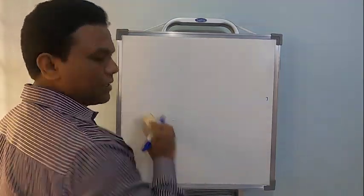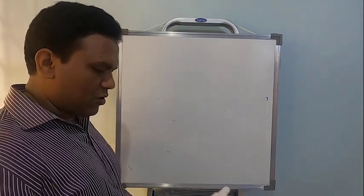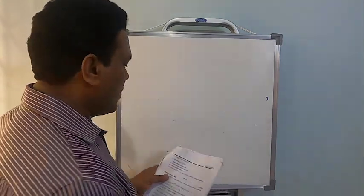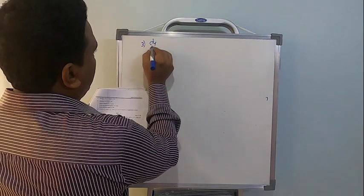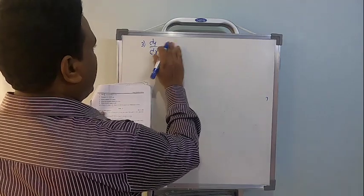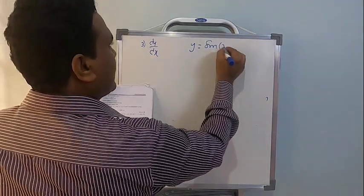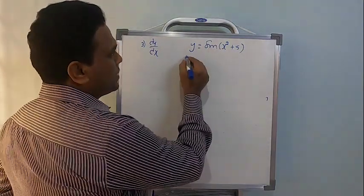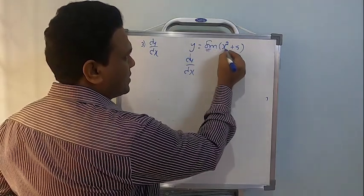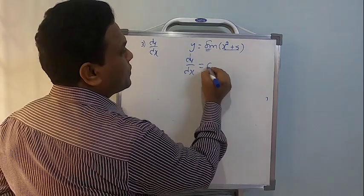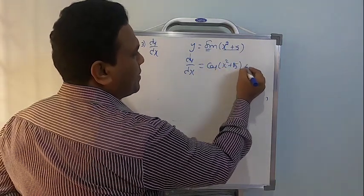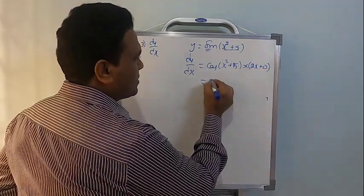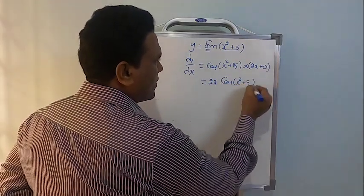In the 2015 annual examination, if y = sin(x² + 5), find dy/dx. Differentiating: dy/dx = cos(x² + 5) × 2x. So the answer is 2x·cos(x² + 5).